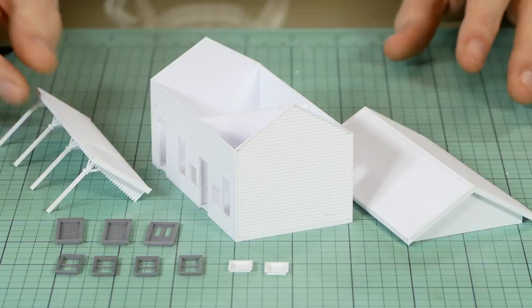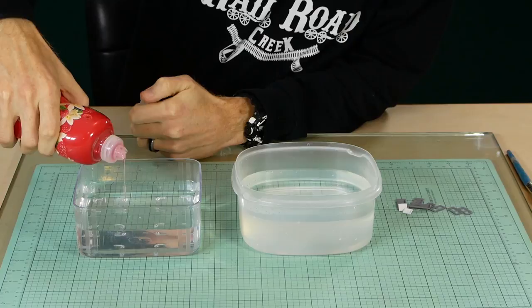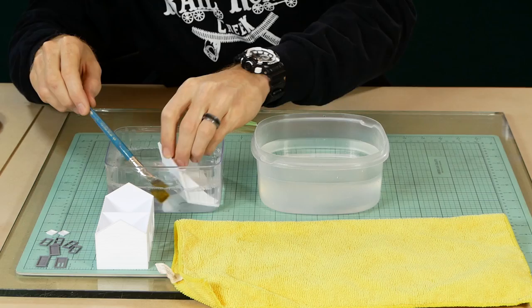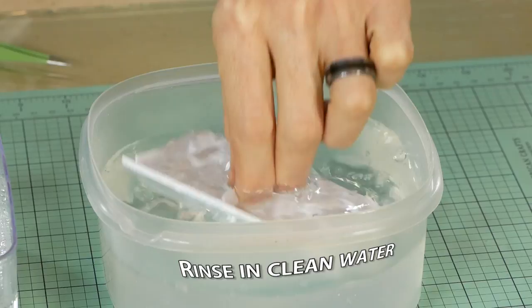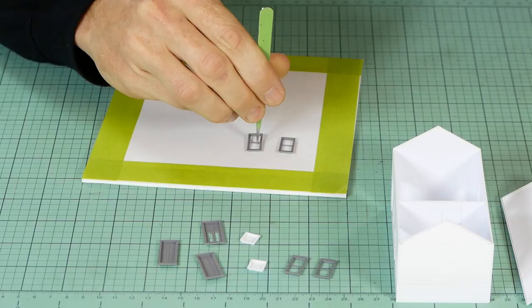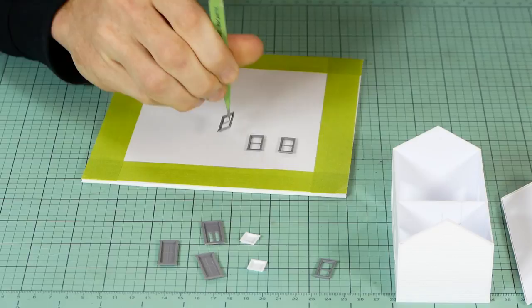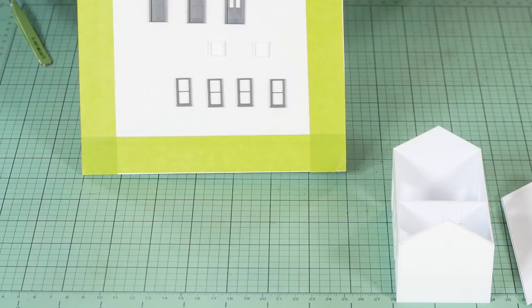Now we're almost ready to give everything a prime with the Vallejo primer but first I wash all the pieces in a mildly soapy water and rinse to remove dust and oil from my fingers. Once it's all dry we're now ready for the primer. Small pieces like the windows and doors can be fixed onto a piece of card using spray adhesive. This will prevent them from flying away when being painted with the airbrush.